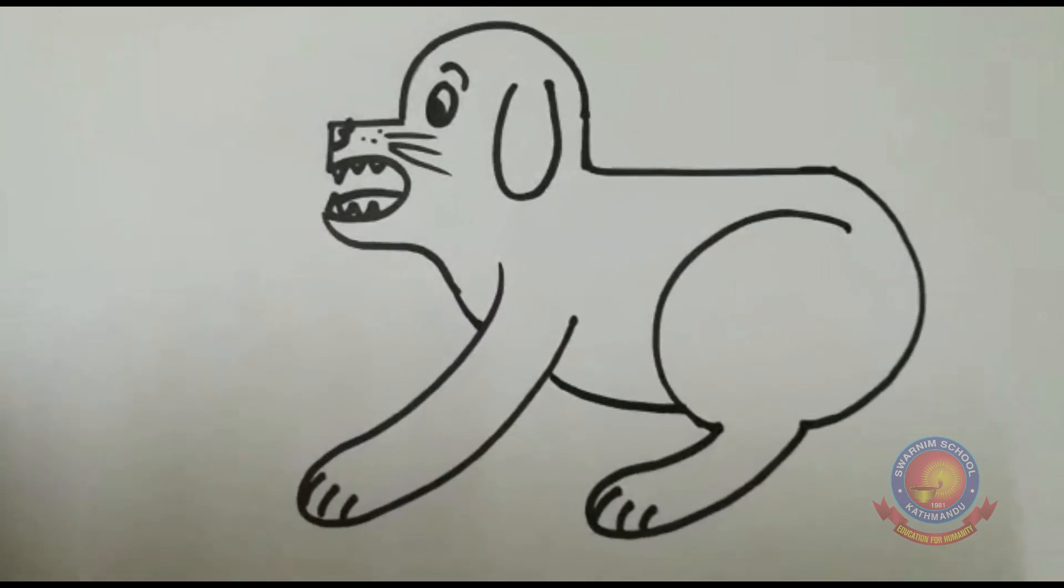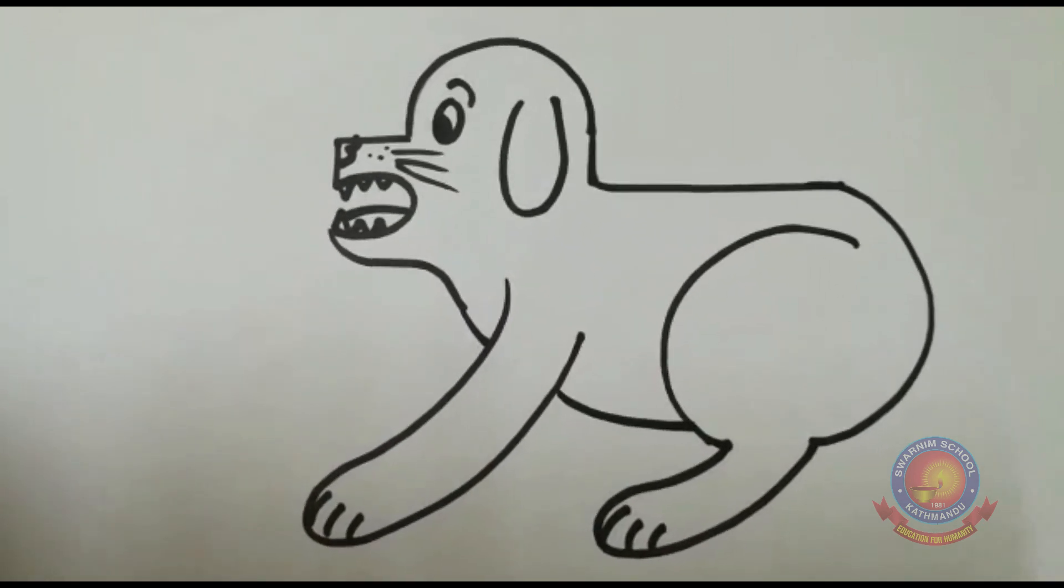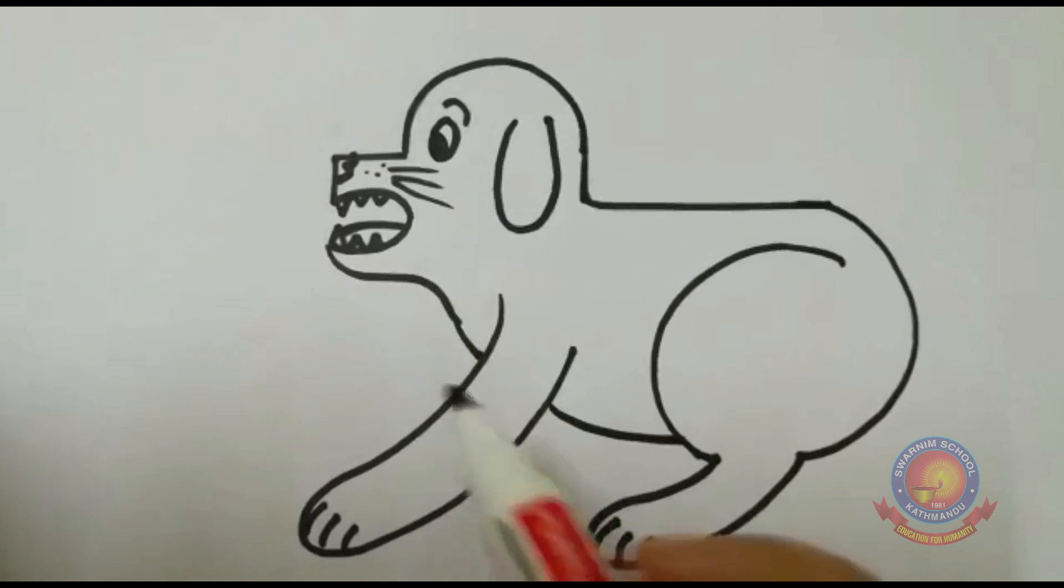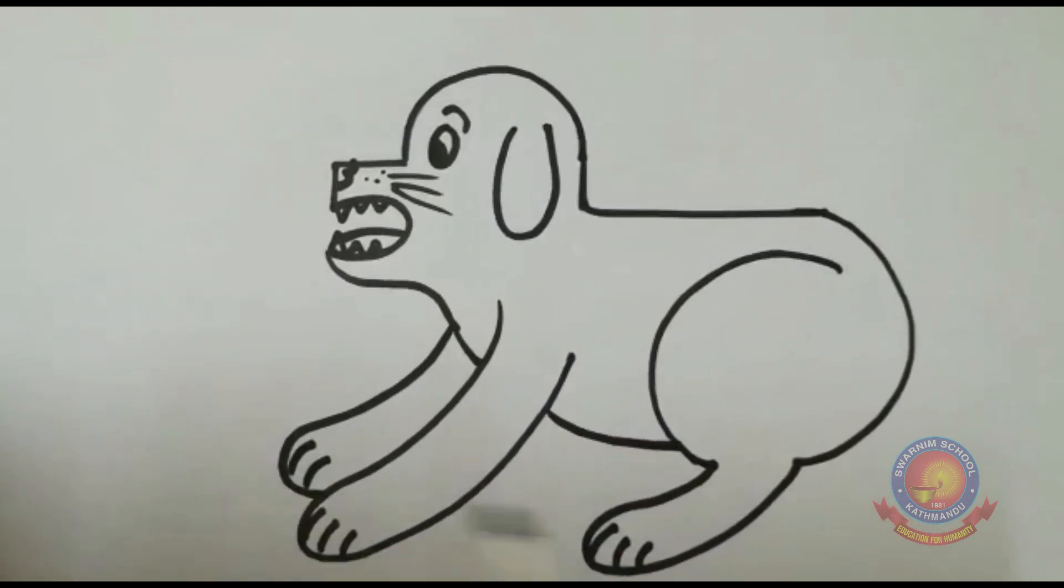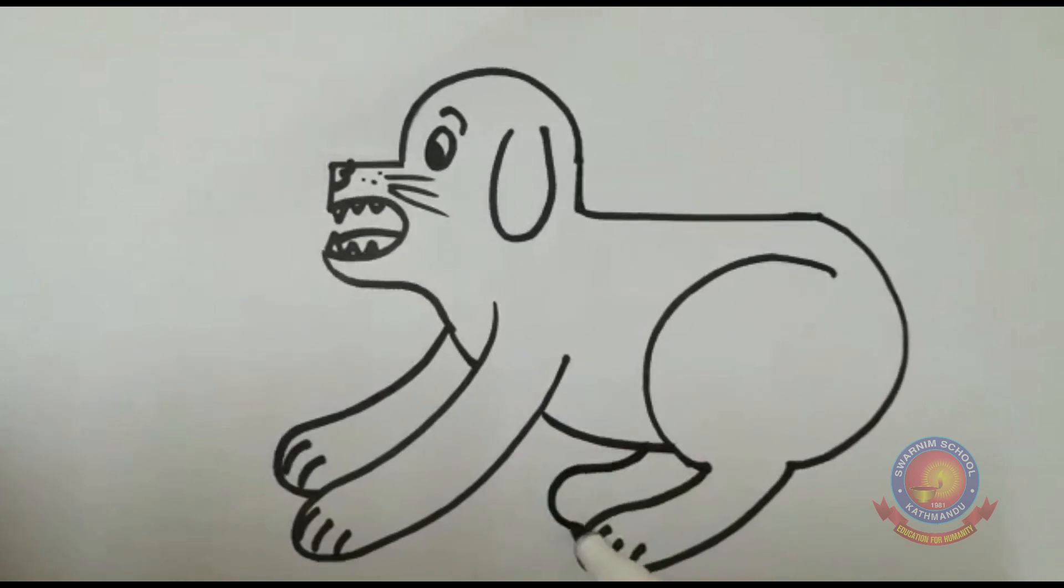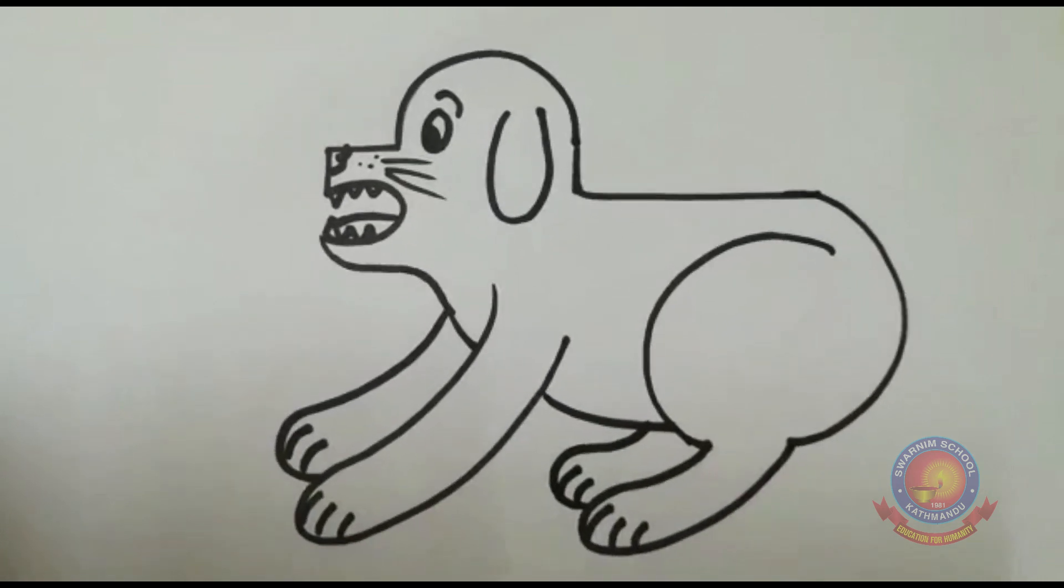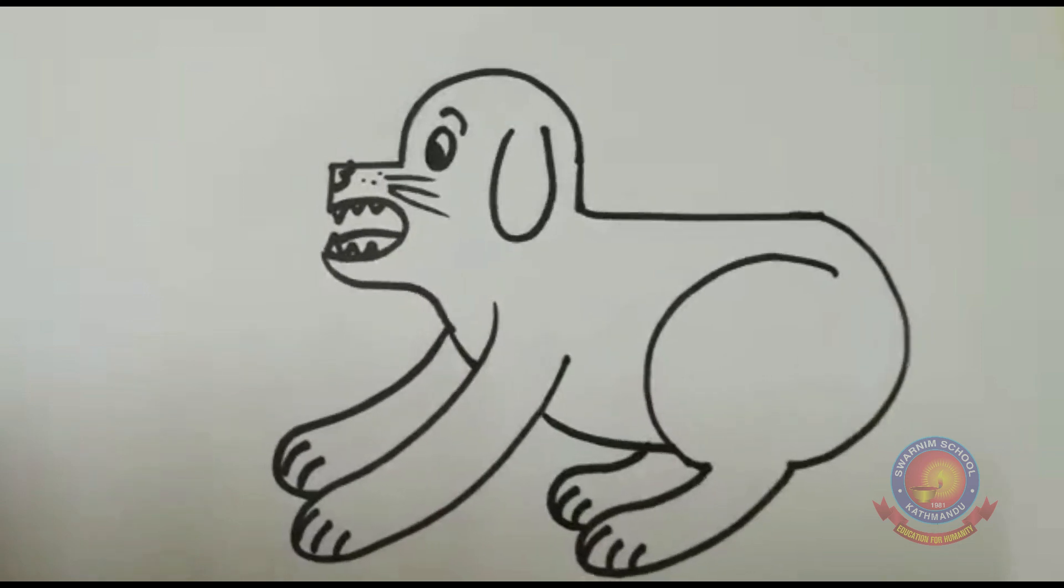Now dog has four legs. We made how many? Two. Let's add two more. From back side, one more leg here. Fingers. From here also back. What is left now? That's right, tail.